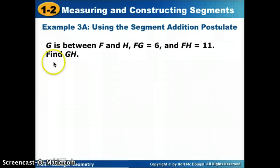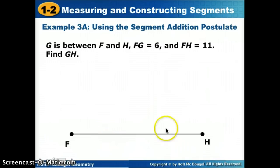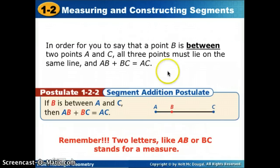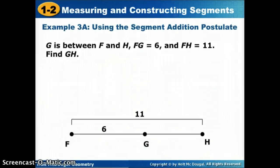Our first problem says that G is between F and H. I would start with drawing a picture. I know I have a segment FH, and it tells us that G is between that somewhere. It doesn't say it's right in the middle, but it's somewhere between. I'll draw a point G. The length of FG is 6, and the length of FH, the whole thing, is 11. I'm going to add that to my picture. Now we're going to set up an equation: part plus part equals whole.